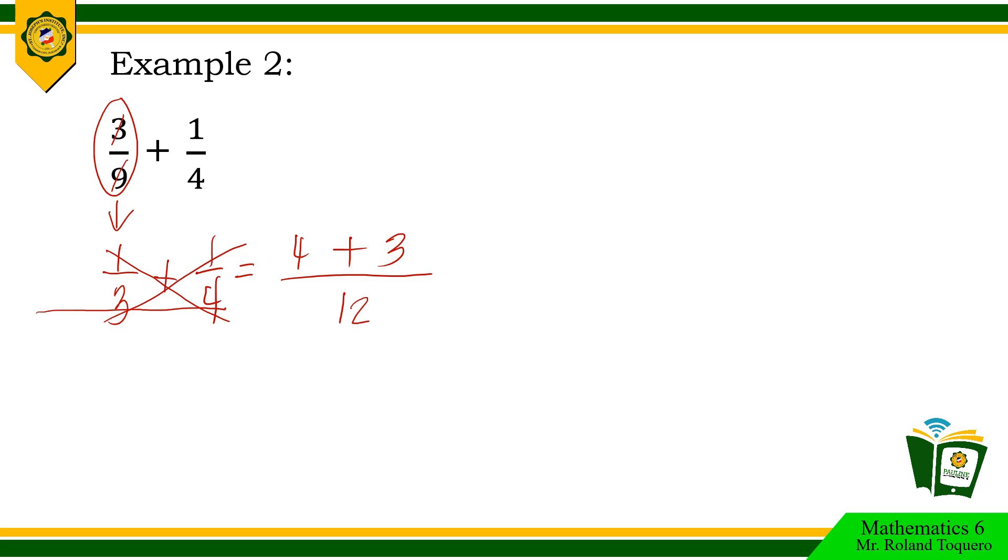Add the numerators. 4 plus 3 equals 7. Copy 12. The answer is 7 over 12. This is now in the lowest term.